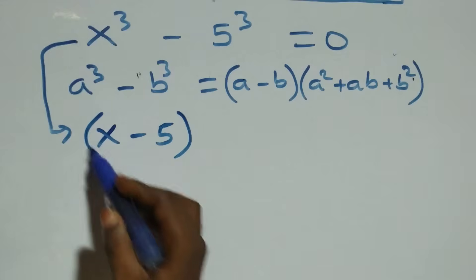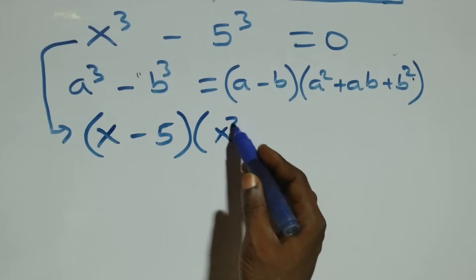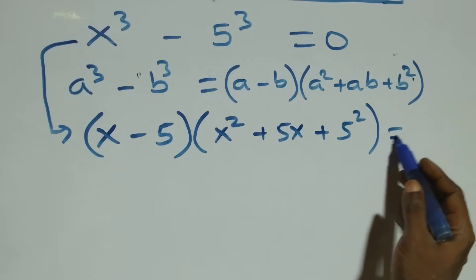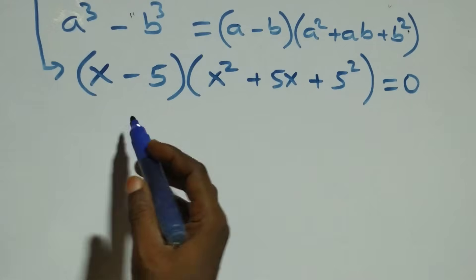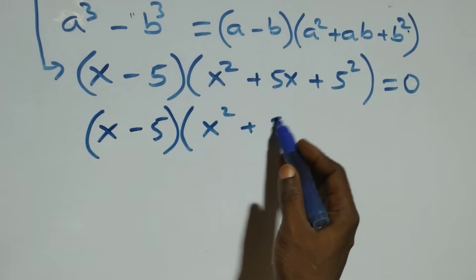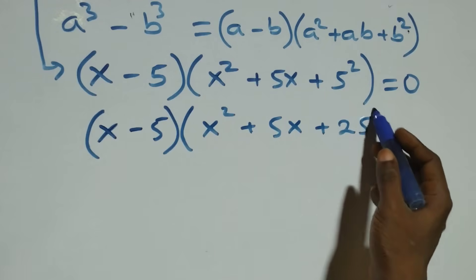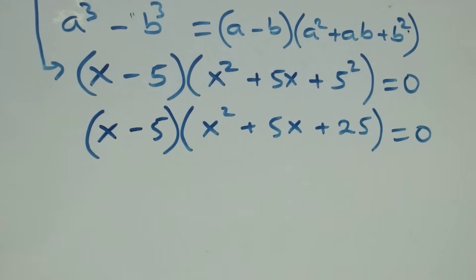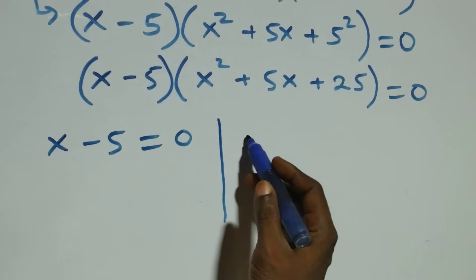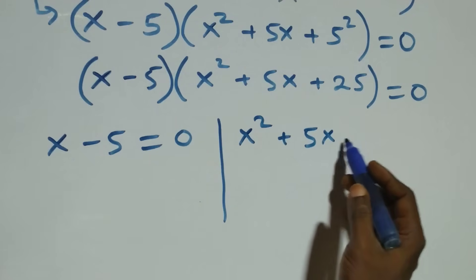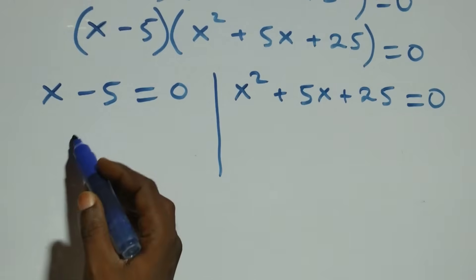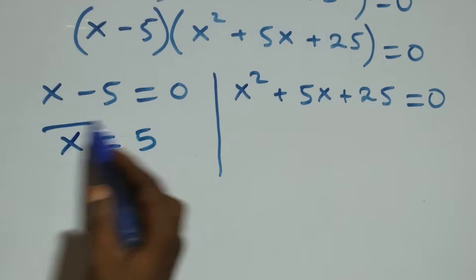So we have x minus 5, in brackets, times x squared plus 5x plus 25, close brackets, equals to 0. From this we get two cases: x minus 5 equals to 0, giving x equals to 5 as a real solution, or x squared plus 5x plus 25 equals to 0 as a quadratic equation.